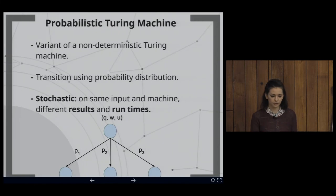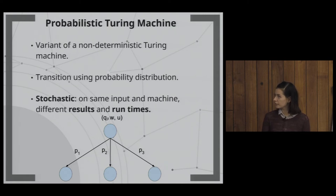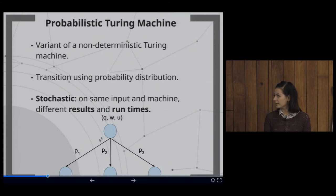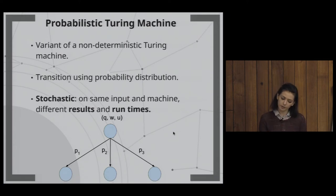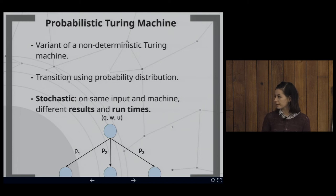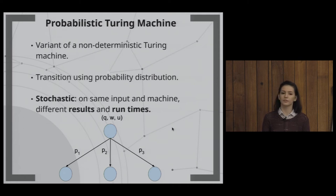Now let's move to a probabilistic Turing machine. This is a variant of the non-deterministic Turing machine, but instead of allowing any transition, we use a probability distribution over transitions. This is stochastic, meaning that on the same input we can get different results and different runtimes.